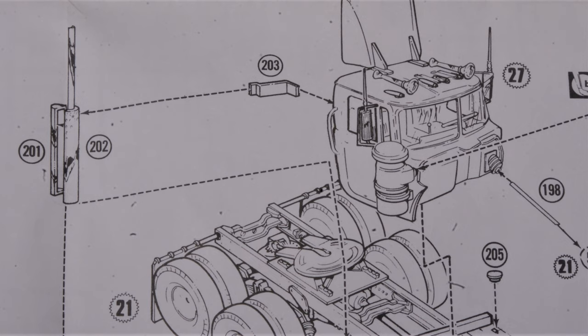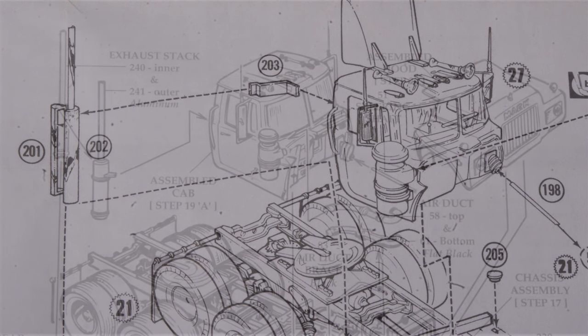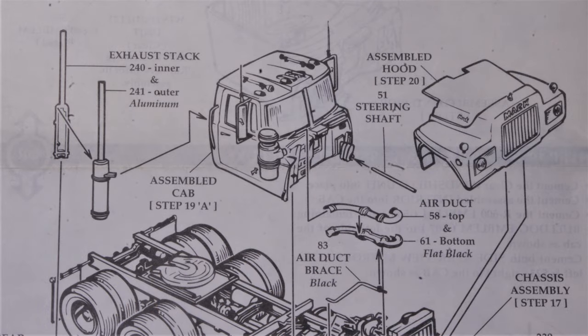Whether it's the option with a separate stack brace, part number 203 here, or the version that has a bracket molded on to one half of the muffler assembly, as illustrated here.